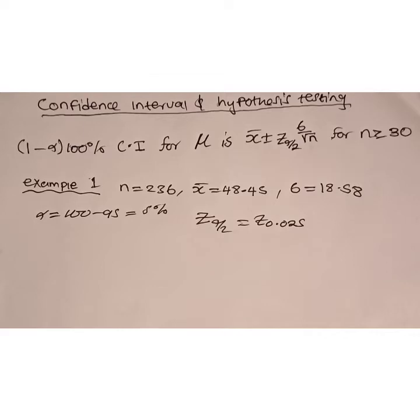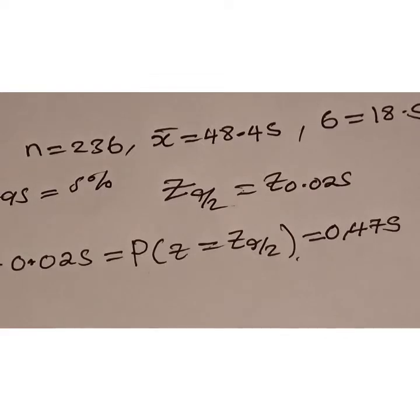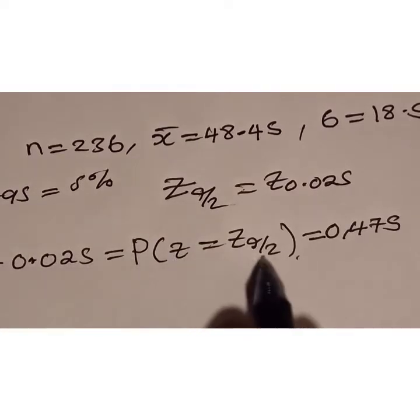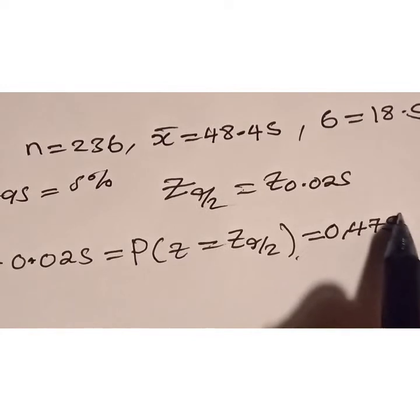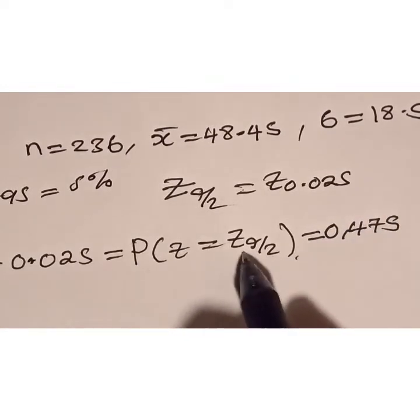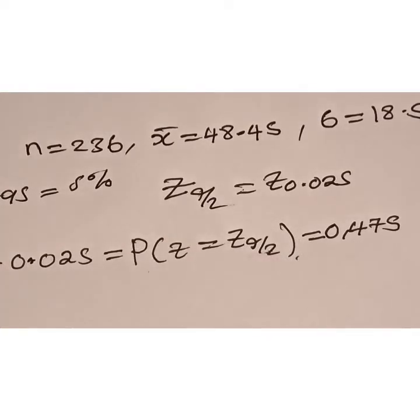When looking for z of alpha over 2, the probability of z equals z alpha over 2. We'll be looking for this value from the z table, then we'll find the corresponding z alpha over 2.